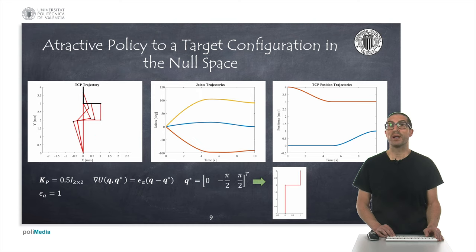Here, we have another example, we have selected a different attractor configuration. Again, the end-effector trajectories are the same, but the joint trajectories are different and take values close to the desired attractive configuration.